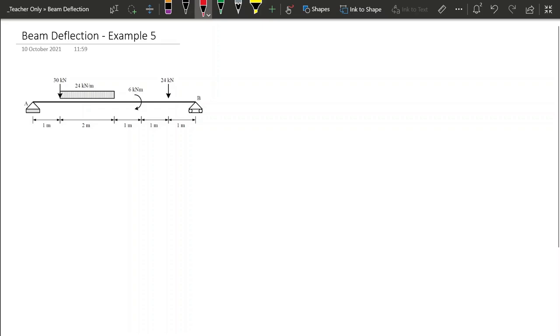So in this case we have a simply supported beam, so we're going to take again z to go from left to right, and since this is a simply supported beam, we're interested in finding the vertical reaction at A, and for that we're going to do the sum of moments at B equal to zero.